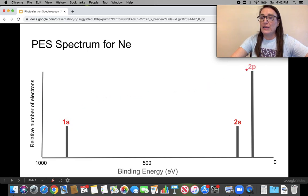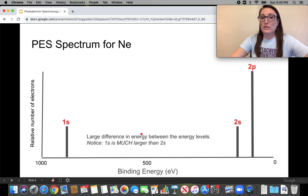Next, look at the triple height of this one, which we'll assume then that's the 2p. So you've got six possible electrons that can be removed. So again, a quick review, look at the large difference in energy between those energy levels.